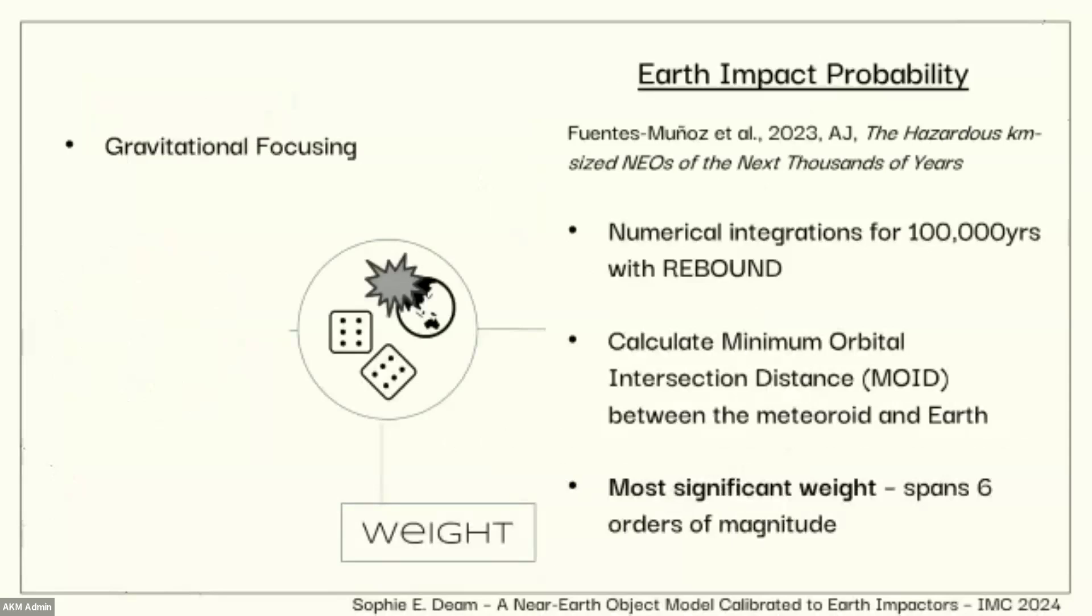So I apply some sort of weighting to account for detection efficiency. I then want to weight my data by its Earth impact probability. So trying to replicate what objects are actually out there, but we can only see the objects that we encounter with the Earth. So this involved only looking at its most recent history for a fireball event, not looking at its long-term dynamics. So this was created with some numerical integrations with rebound, figuring out which fireballs spent more time close to Earth, as far away from Earth for the MOID distance, and then using that as a relative weighting between fireball events. And this is the most significant weighting for the data set, and it spans about six orders of magnitude. So it's a really strong factor in the debiasing step, and I account for gravitational focusing.